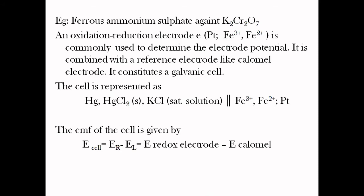A typical example: if you titrate ferrous ammonium sulfate against potassium dichromate K₂Cr₂O₇, the K₂Cr₂O₇ is taken in the burette and added at particular intervals. We construct an electrochemical cell using a reference electrode, and the ferrous ammonium solution with a platinum electrode is placed as the indicator electrode. Then we construct the electrochemical cell.